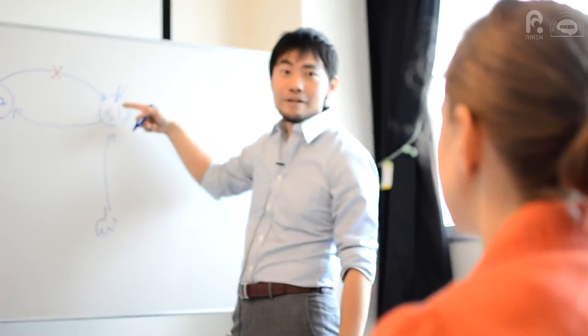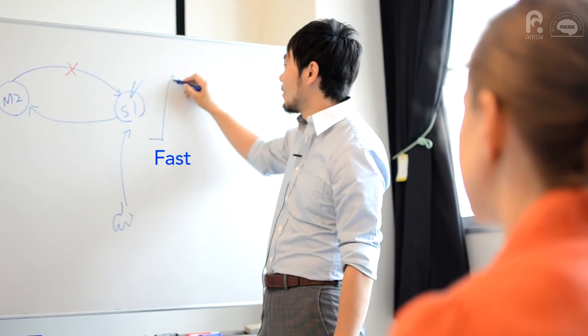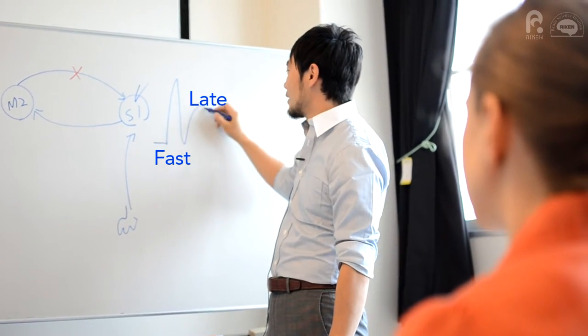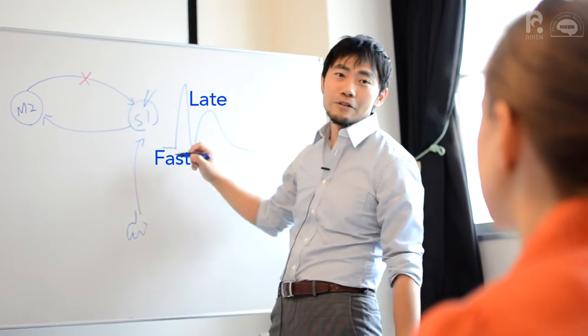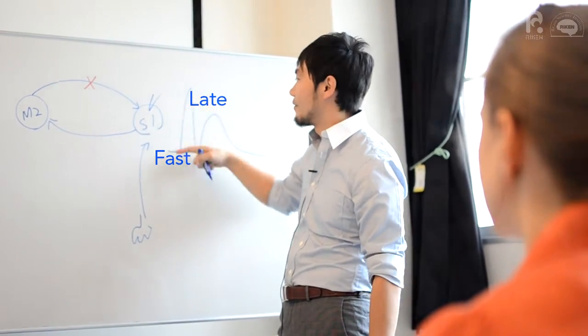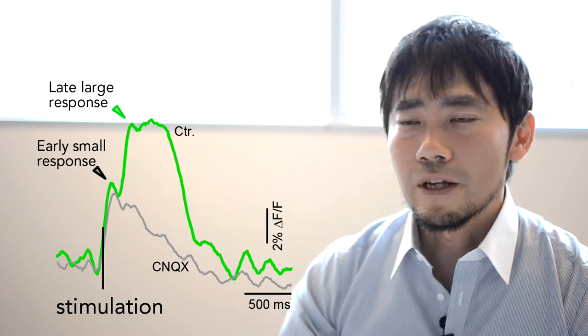The sensory stimulation, for example hand stimulation, evoked temporally distinct two activities: fast activity and late activity. The late activity comes from M2 to S1 area.